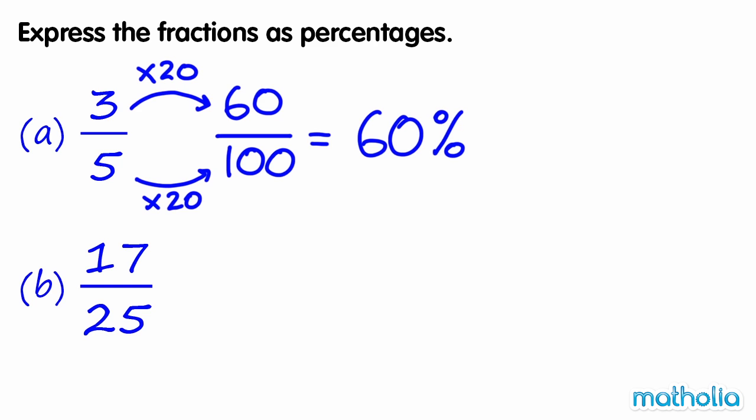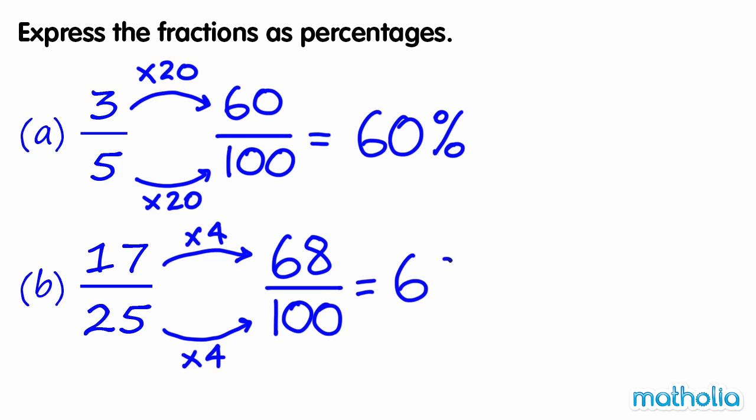B. 17-twenty-fifths. 17-twenty-fifths is equal to 68 one-hundredths, which equals 68%.